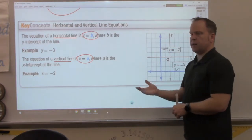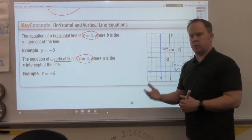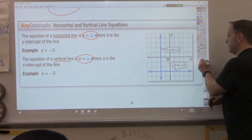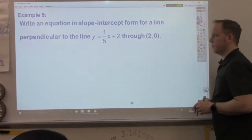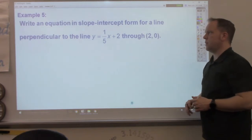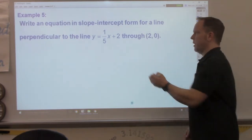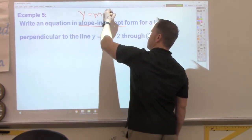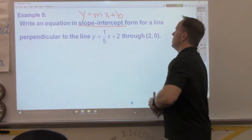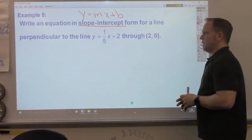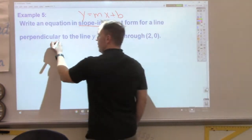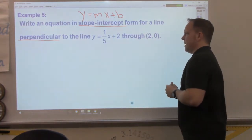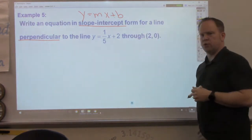Now, we've been talking lately about parallel lines, perpendicular lines. Let's do a little more of that. Write the equation in slope-intercept form. Okay, there's a key right there. Slope-intercept form. So, my final answer should look like this. For a line that is perpendicular. Now, that's a key word right there. Perpendicular.